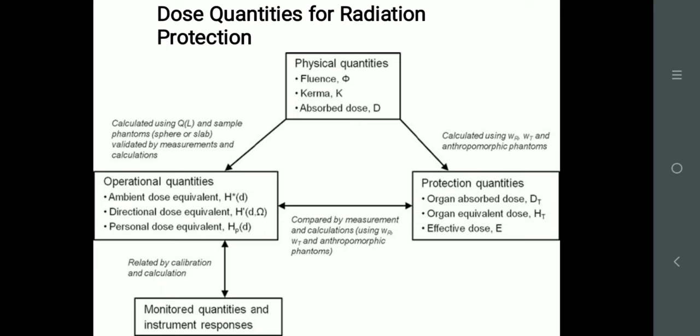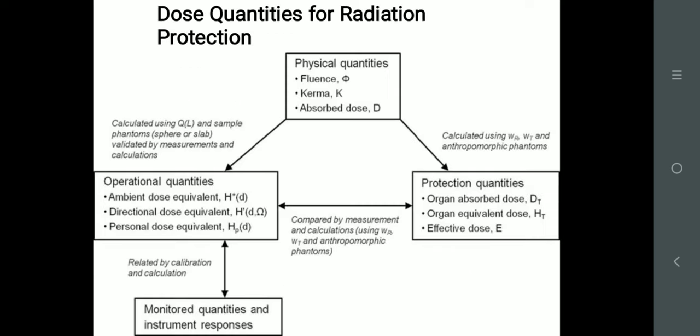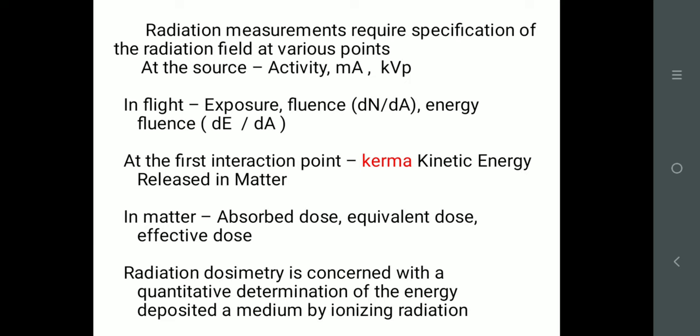If you want to commit the physical quantities, we have fluence, we have kerma, we have absorbed dose, operational units, we have equivalent dose, personal doses, and protection equipment. We require organ dose, organ equivalent dose, and effective dose. All these things are very important in radiation protection, and units also play an important role.